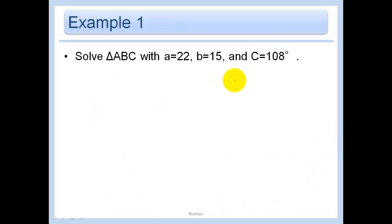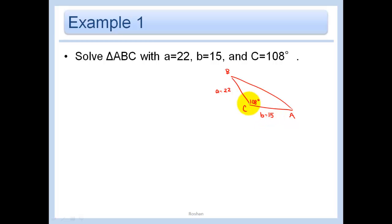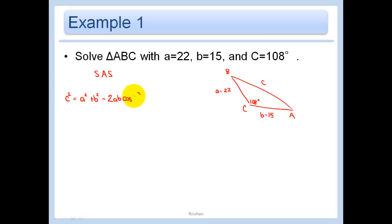Now let's do this problem. I see an obtuse angle, so I'll label the triangle with sides a=22, b=15, and angle C=108°. This is a side-angle-side case, so I should be using the law of cosines. The missing side is c, so we use c² = a² + b² − 2ab·cosC. That gives us c² = 22² + 15² − 2(22)(15)·cos108°.